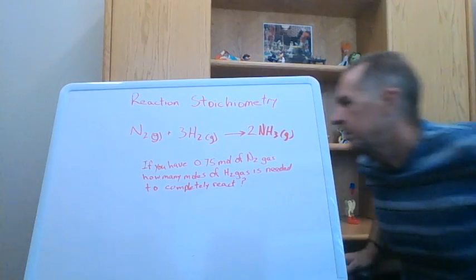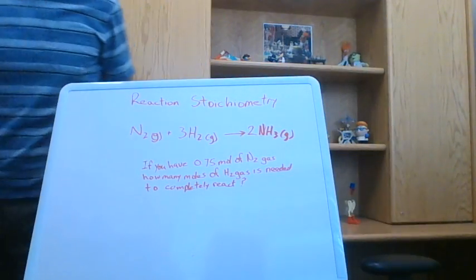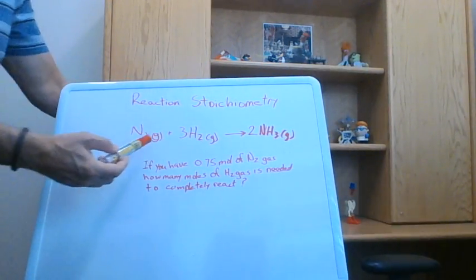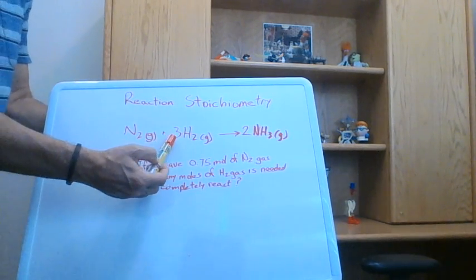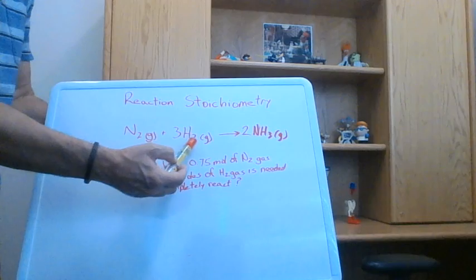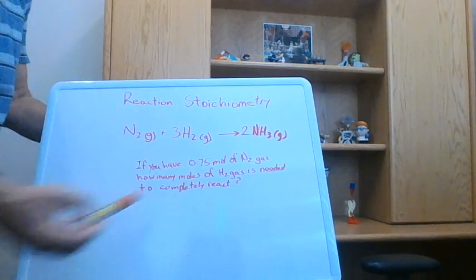So if we have this balanced chemical equation here, it's telling us that if we take one mole of nitrogen, because there's a coefficient of one here, and we add it to three moles of diatomic hydrogen, that we're going to produce two moles of ammonia.